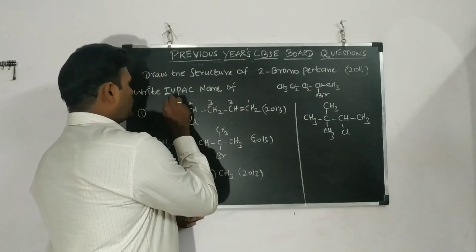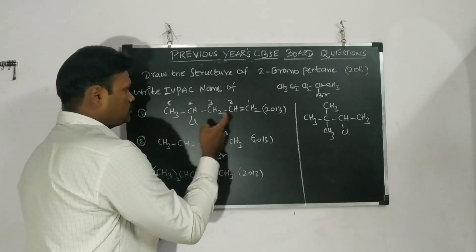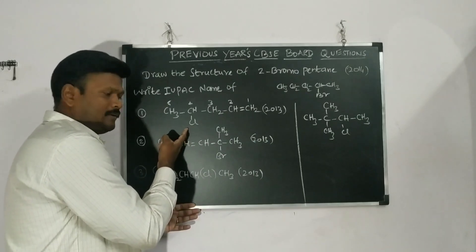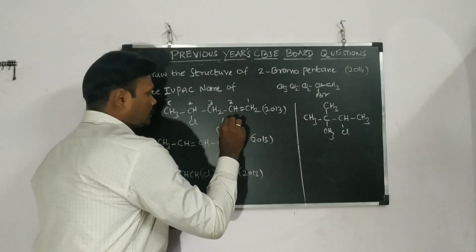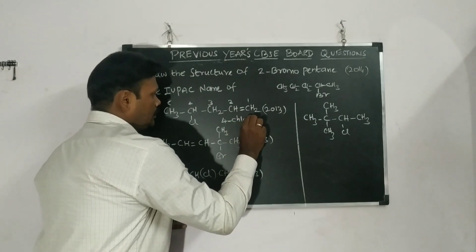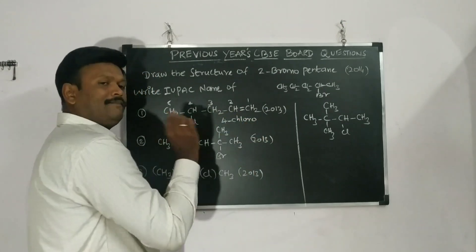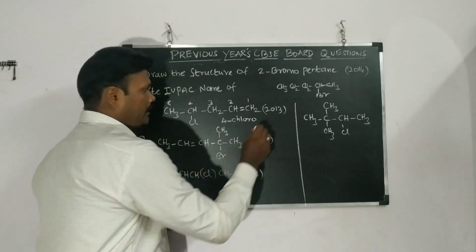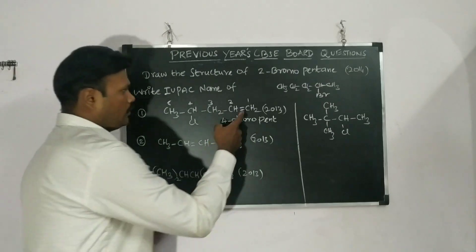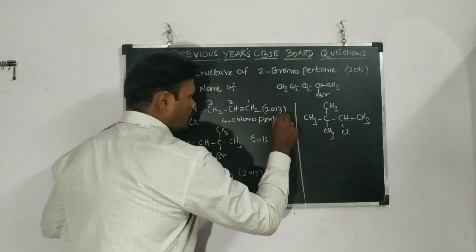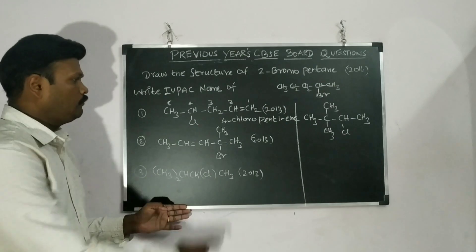Now we can name it. According to alphabetical order, four chloro — then the chain has five carbons, so 'pent.' The first position has a double bond, so 'pent-1-ene.' Therefore the name is 4-chloropent-1-ene.